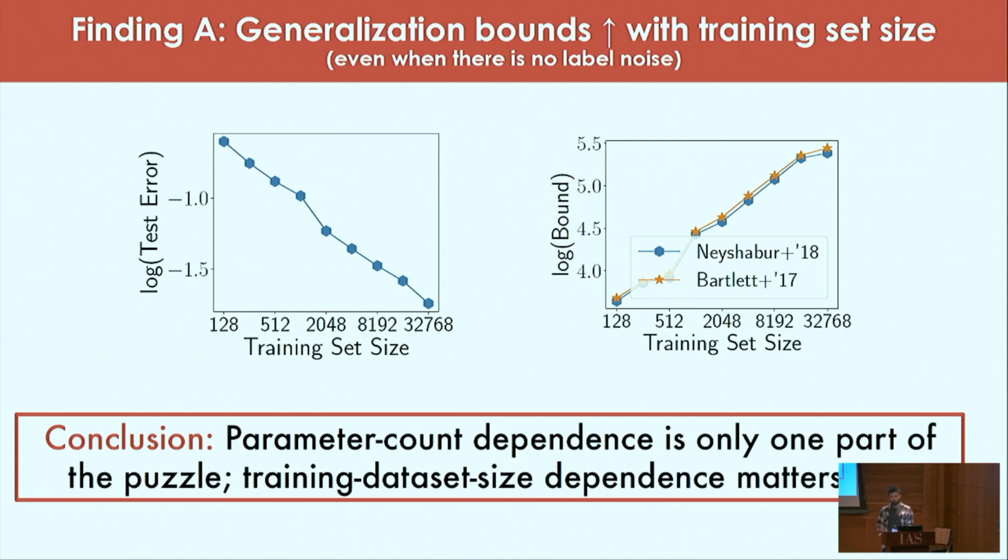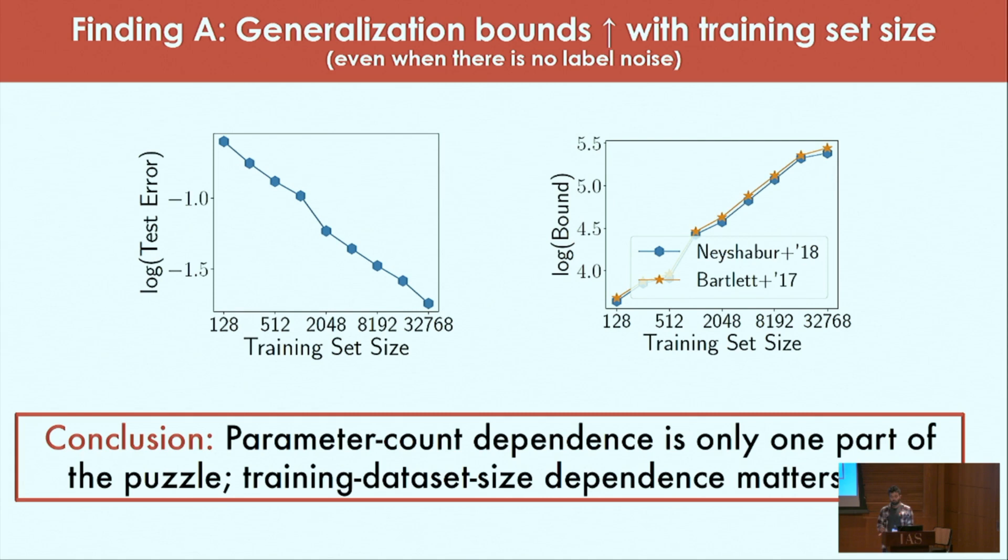This is quite counterintuitive because if you think about it, what this bound is telling me is that if I were to add more training data points to the data set, the algorithm doesn't perform any better and is just probably memorizing these data points. The takeaway is that parameter count dependence is only one part of the puzzle. Looking ahead we must also focus on developing bounds that have at least a sensible dependence on the training set size.